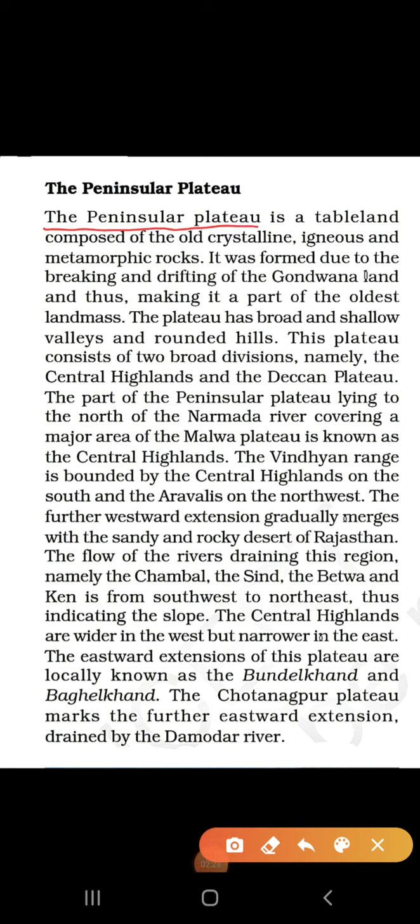Now let's start reading about the peninsular plateau. The peninsular plateau is a tableland composed of old crystalline, igneous, and metamorphic rocks. It is like a table — slightly raised from the general ground level and flat on top, unlike mountains which have peaks. Igneous rocks are formed when lava from volcanoes cools down, and metamorphic rocks are formed when one type of rock converts into another form.